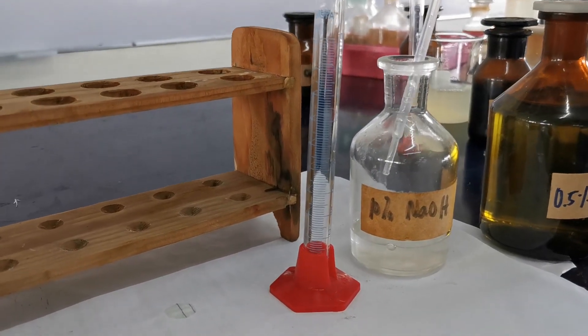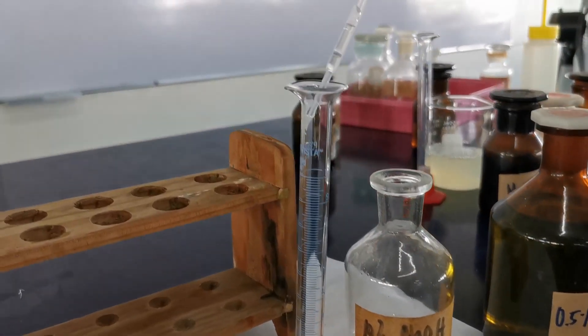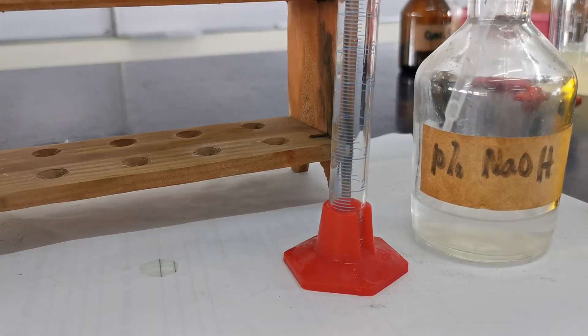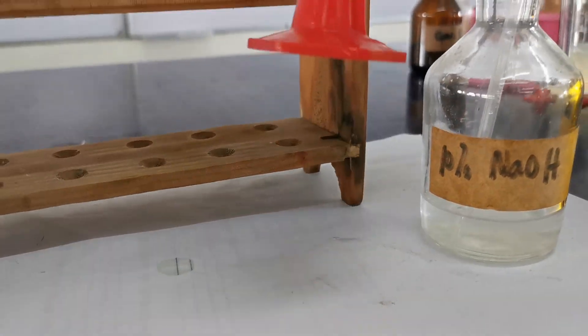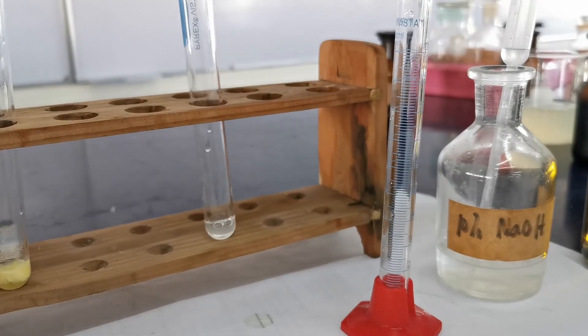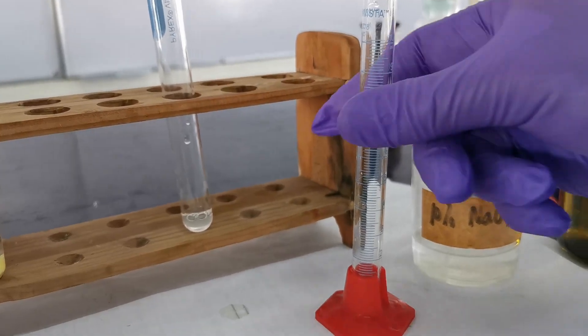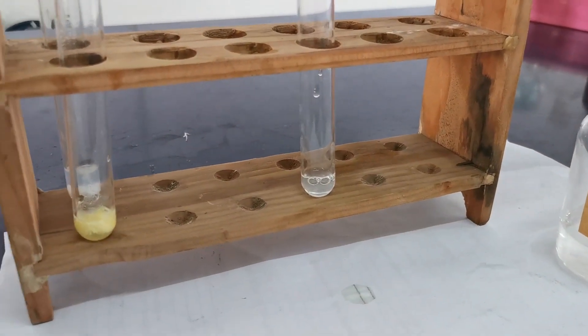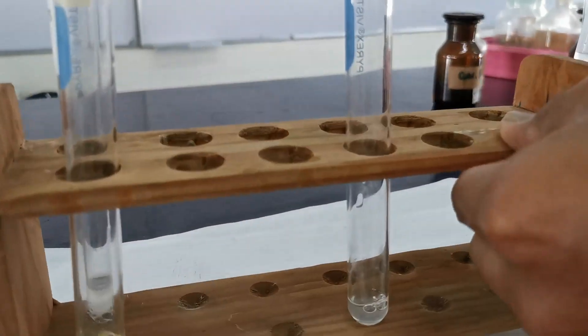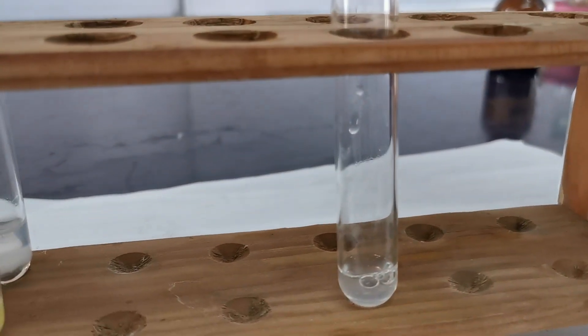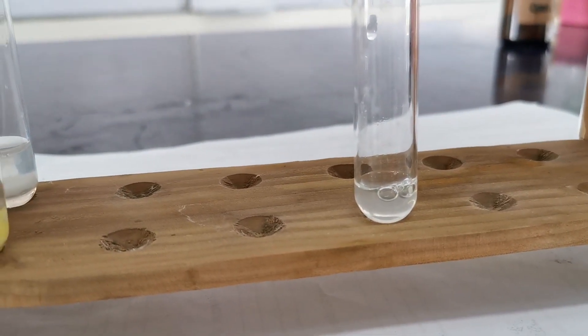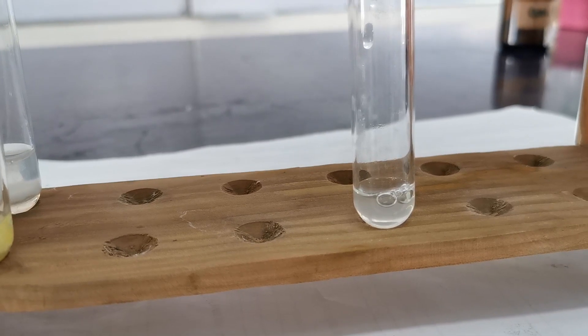Using the graduated cylinder, get 1 ml of egg albumin solution and 1 ml of 10% sodium hydroxide solution. Mix the two solutions.